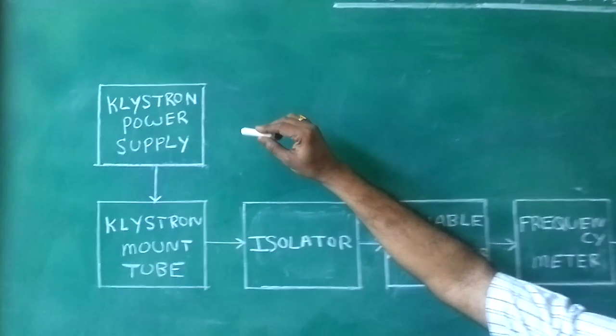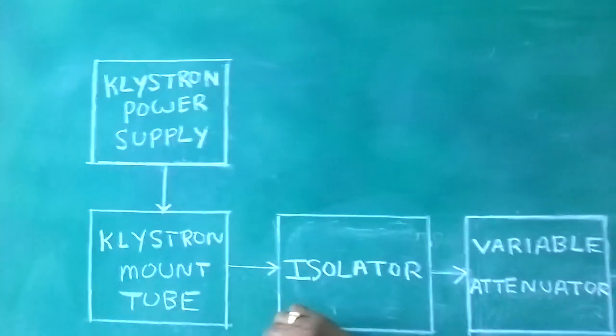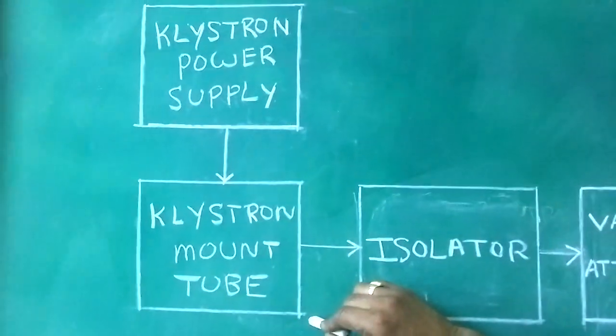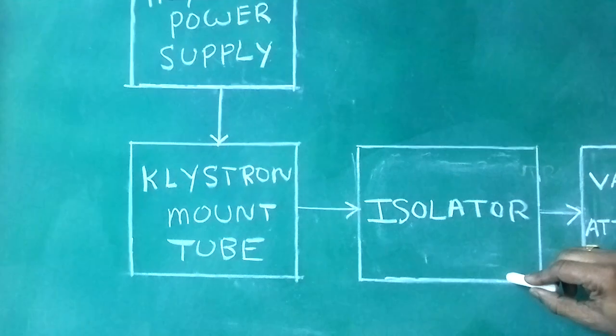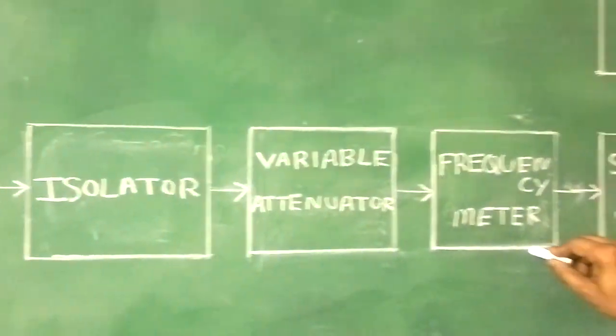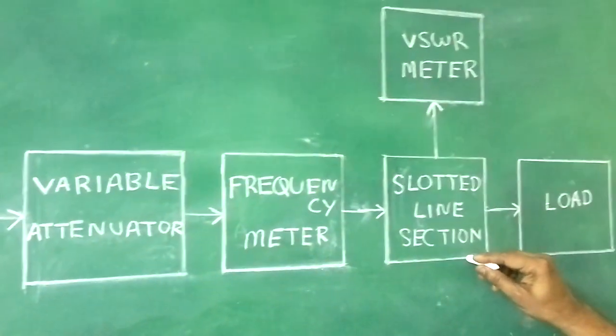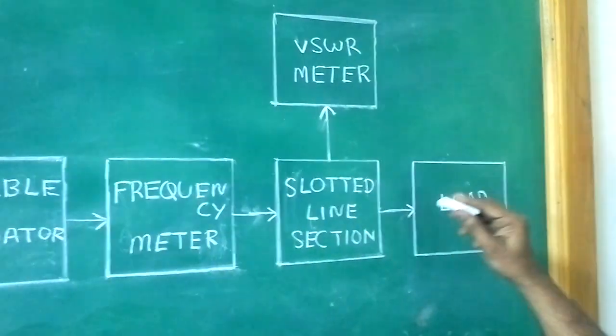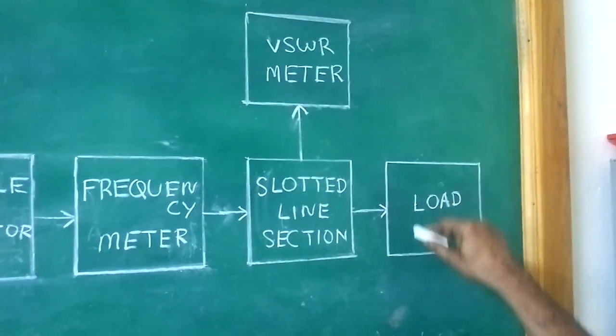From there to klystron mount and tube, from here it goes to the isolator, then variable attenuator, frequency meter, then slotted section, and according to the load we can see the readings in the VSWR meter.